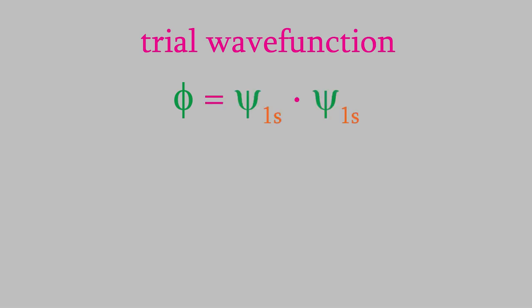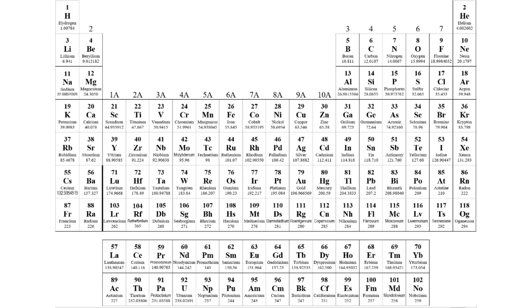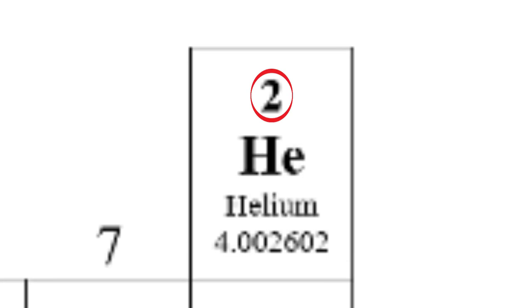As we saw in that video, if we use a trial wave function for helium composed of a product of two hydrogen wave functions, we can use it in the Schrödinger equation. When we do, the energy we calculate is very close to the actual energy. But we also found out that the calculation predicts that z, the charge on the nucleus, is 27 over 16. But we know that the atomic number of helium is 2 — why do we get a number smaller than that?